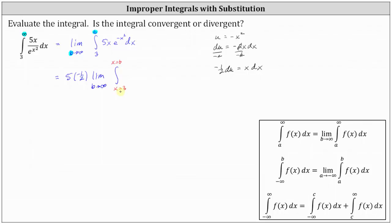Now writing the integral with respect to u: we factored out the five, and x dx is equal to negative one-half du. We already factored out the negative one-half, so now we have du. And e to the power of negative x squared is just e to the u. The integral of e to the u is just e to the u, which is really e to the power of negative x squared.